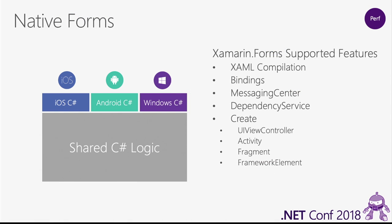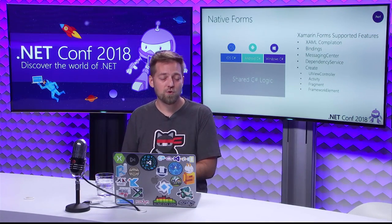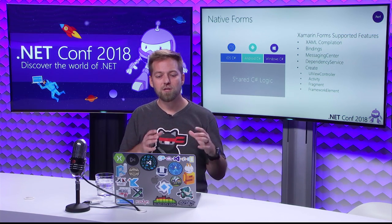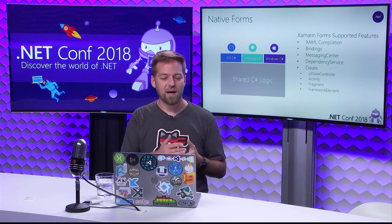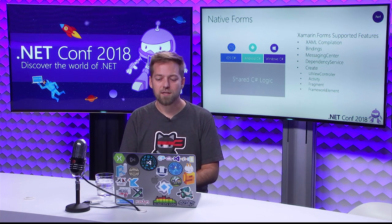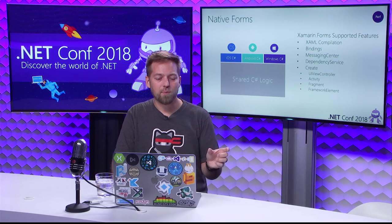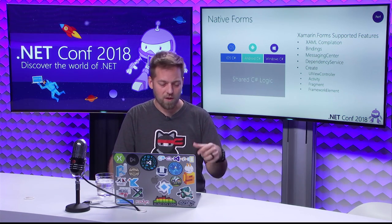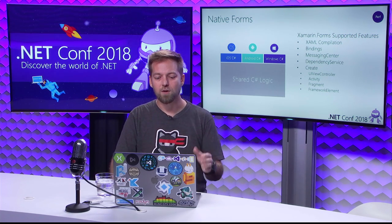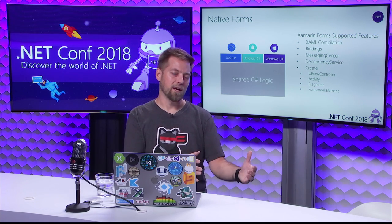Native forms is when you can take a Xamarin Forms UI and embed it directly into an iOS, Android, WPF, Mac OS, or GDK application. Instead of Xamarin Forms being the container for your whole application, you can have your native UI and just use Xamarin Forms where you want shared UI. It works with XAML-C, bindings, message center, and dependency services. You call a create method on the content page you want to embed, and it hands you the native control — a UIViewController on iOS, an Activity or Fragment on Android, or a FrameworkElement on UWP.